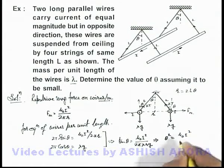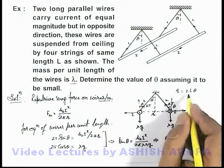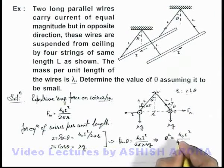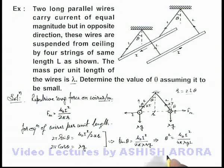This 2L will be left over here, so this will be 4 pi lambda g L. Now using this we are getting the value of theta as under the root mu naught i squared by 4 pi lambda g L. That will be the answer to this problem.